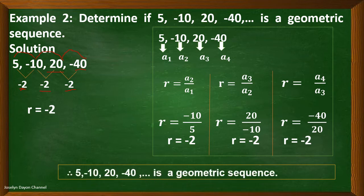By formula, that is a₂ divided by a₁, or a₃ divided by a₂, and a₄ divided by a₃. By substitution, we have a₂ which is negative 10 divided by 5; a₃ divided by a₂, that is 20 divided by negative 10; and a₄ divided by a₃, that is negative 40 divided by 20. All of them give a ratio of negative 2. So, the given sequence is a geometric sequence.